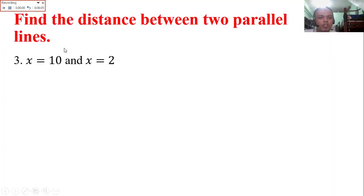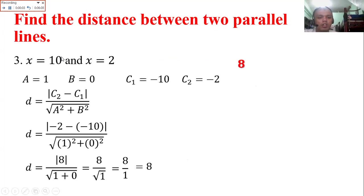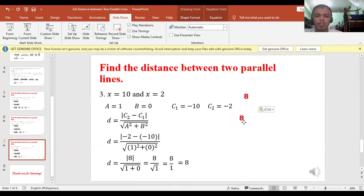Although this is easy, even without undergoing the solution, there's a technique here. The technique is just subtract: 10 minus 2 equals 8. The distance is in units, 8 units. 10 minus 2 is 8. You don't need to undergo this whole process. But this is only applicable when the problem is like this.